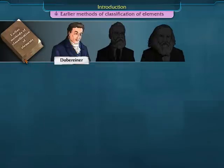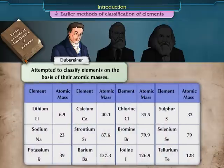Doberiner was one of the early scientists who attempted to classify elements on the basis of their atomic masses.